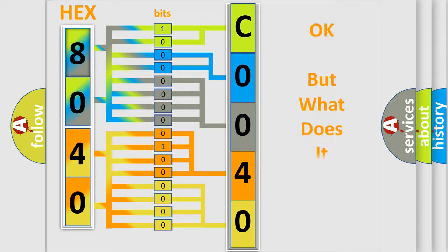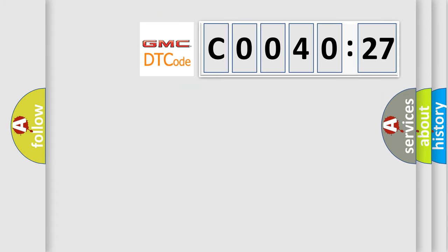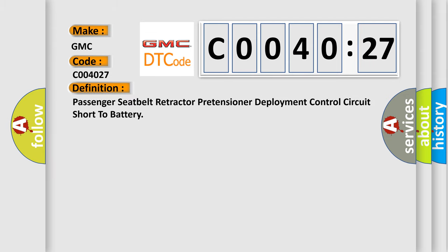We now know in what way the diagnostic tool translates the received information into a more comprehensible format. The number itself does not make sense to us if we cannot assign information about what it actually expresses. So, what does the Diagnostic Trouble Code C0040:27 interpret specifically for GMC car manufacturers?